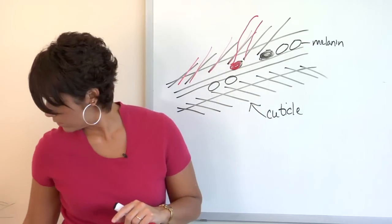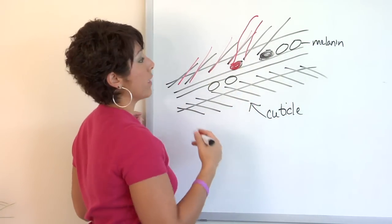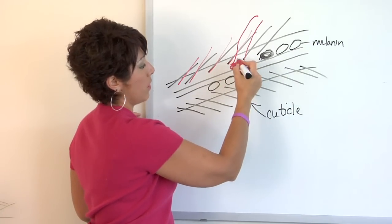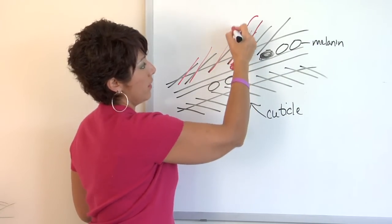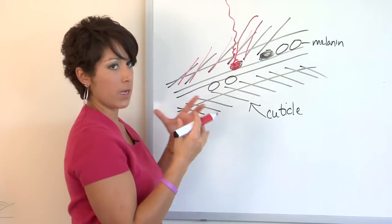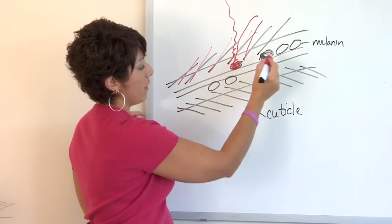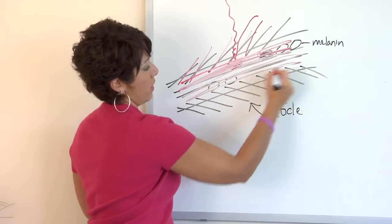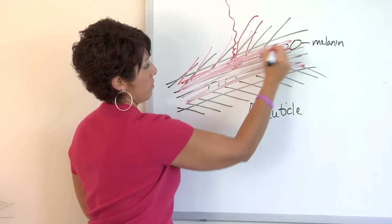So when you shampoo out the color as it's processing, the color molecules have been dissipated in the air with the peroxide as it's oxidizing, and what you're left with is the colored hair shaft, which is whatever color you want it to be, in this case it's red.